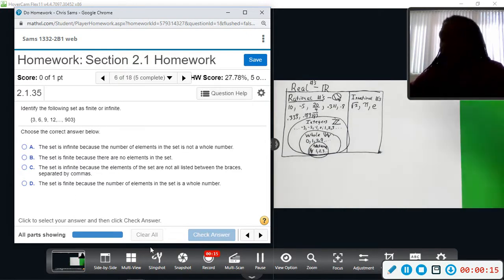Finite means we can count the number of elements. It has a certain number we can stop at. Infinite means it goes on forever to infinity, which is not a number, not something that we can count to.